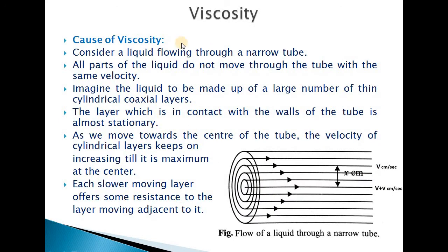Now what is the cause of viscosity? Suppose there is a narrow tube and a liquid is flowing through it. You will observe that all parts of the liquid do not move through the tube with the same velocity. The layers close to the wall of the tube are slower compared to the layers near the center of the tube.